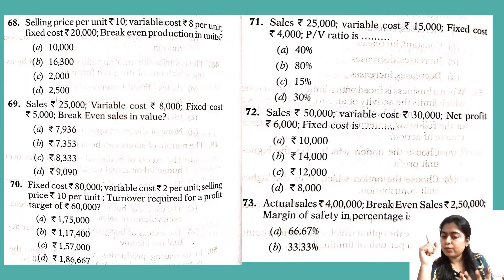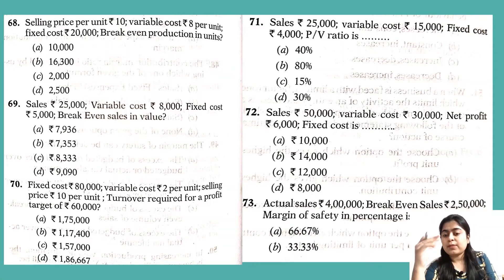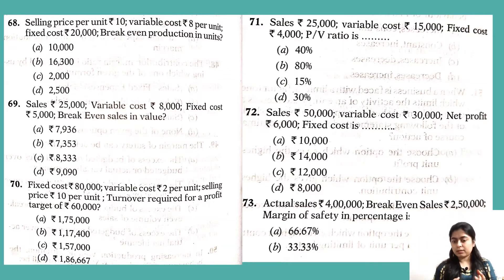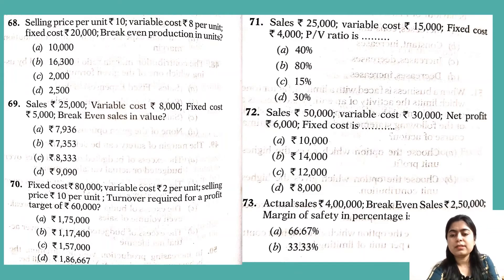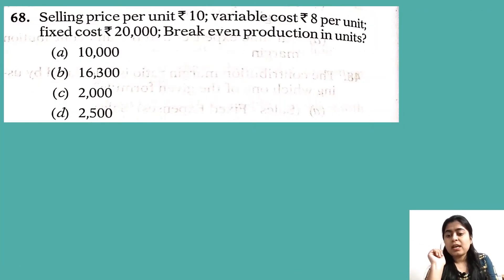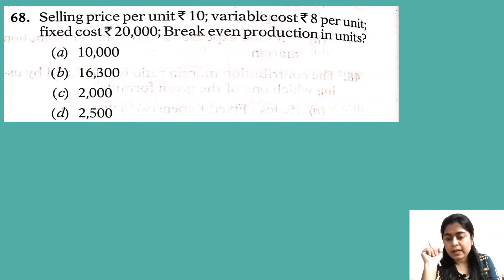Now let's solve the questions. Question 68: Selling price per unit is rupees 10, variable cost is rupees 8 per unit, fixed cost is rupees 20,000. Find break-even production in units. Options are 10,000; 16,300; 2,000; or 2,500.